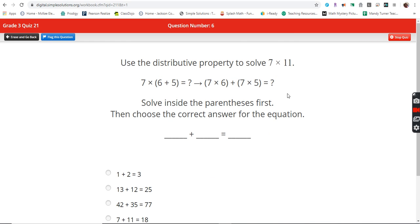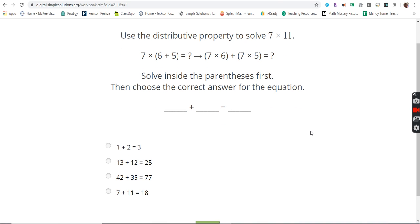Use the distributive property to solve seven times 11. Well, right off the bat, I know that seven times 11 is 77. So it can only be this, but we solve parentheses first. Seven times six is 42. Seven times five is 35.